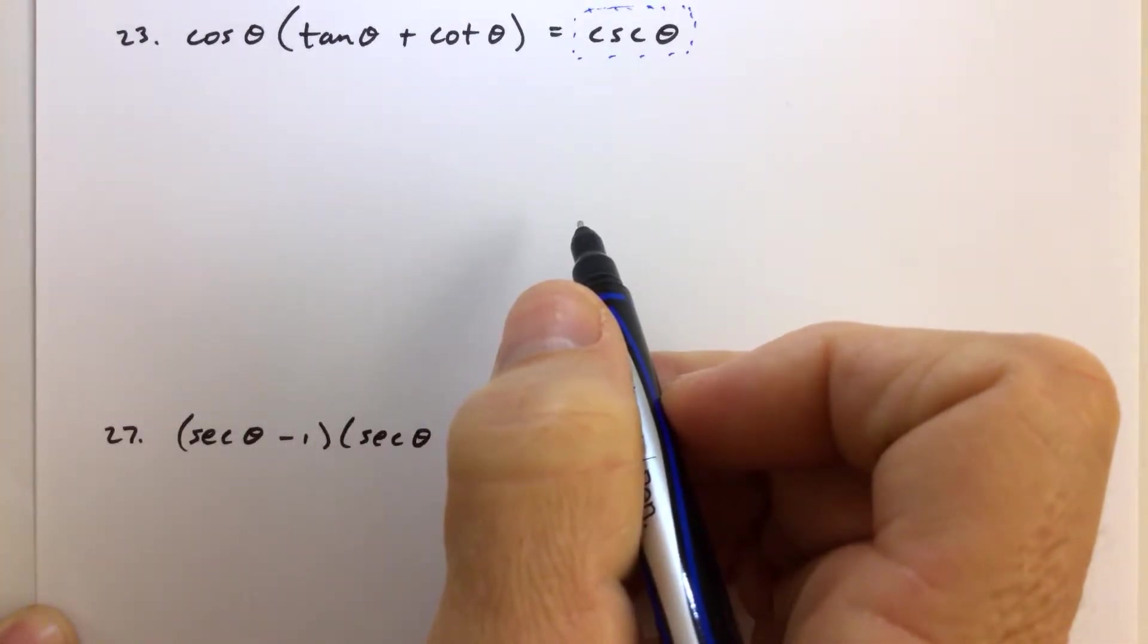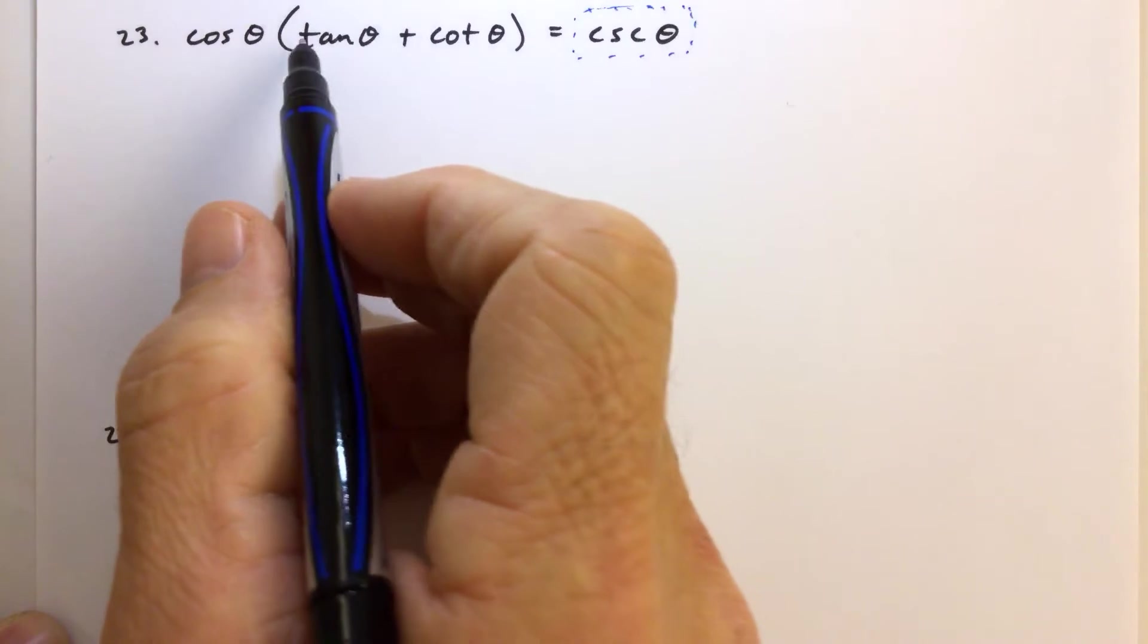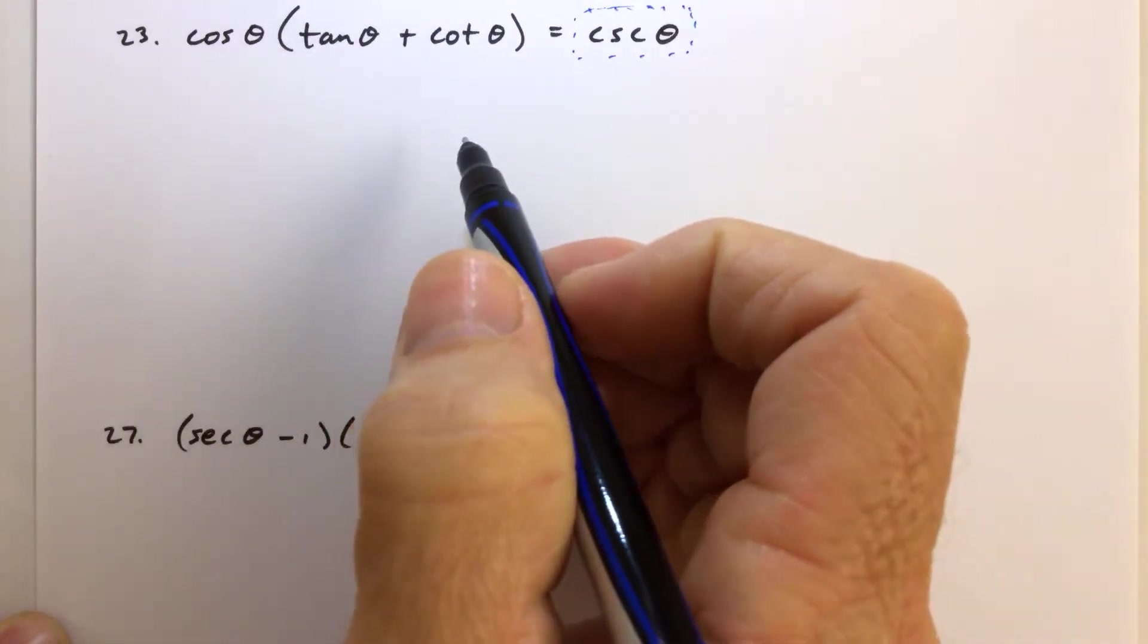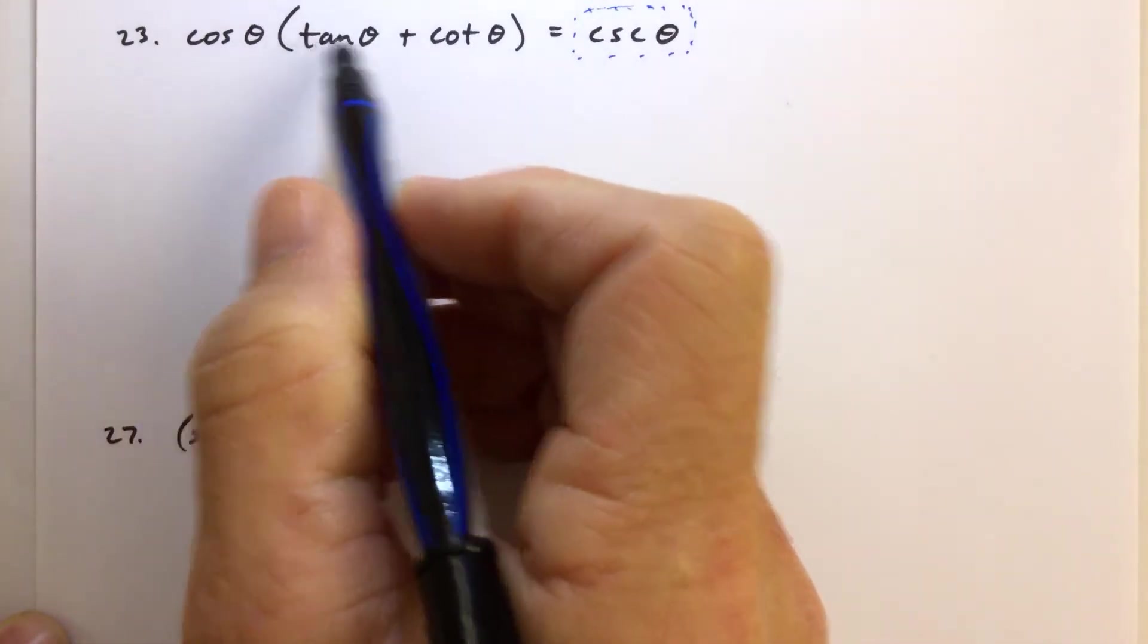If you also remember, the next rule of thumb is, when in doubt, convert everything in terms of sine and cosine.